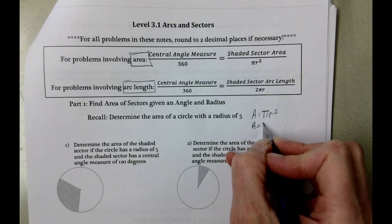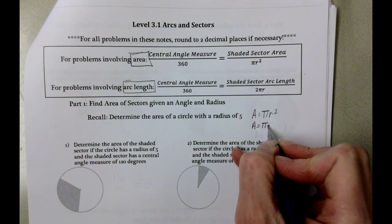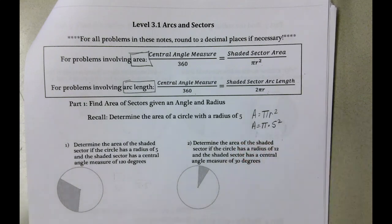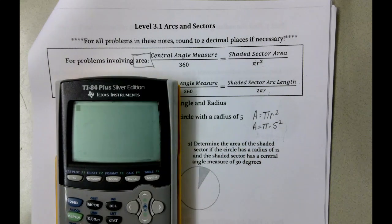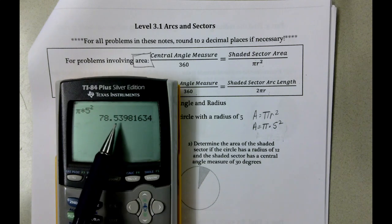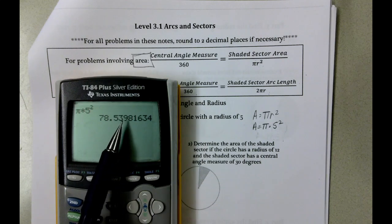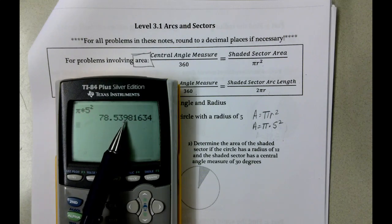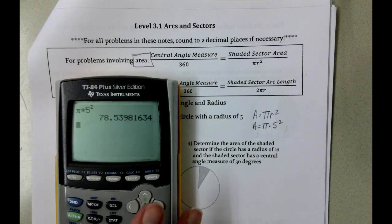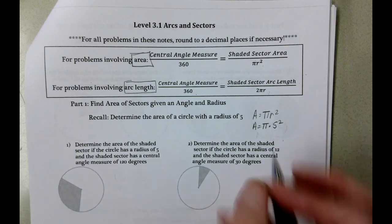So we get A equals π times 5 squared. And then π times 5 squared is 78.53539. We're going to round to two decimal places. 9 is 5 or higher, so that's going to be 0.54. So 78.54 is our area.